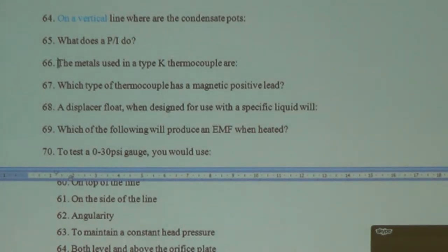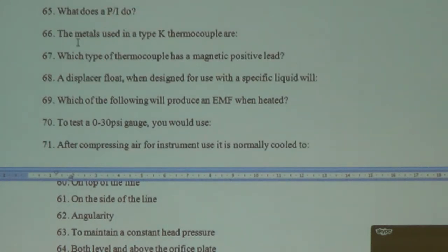The metals used in a K-type thermocouple - thermocouple questions never have been asked so you can leave this out. Which type of thermocouple has a magnetic - they don't expect you to remember the types of thermocouples. There are about seven or eight types of thermocouples with different materials, so not required.